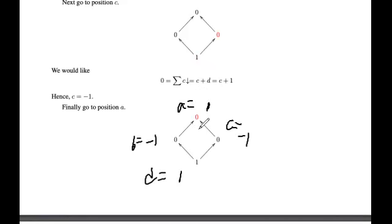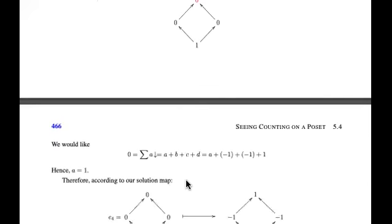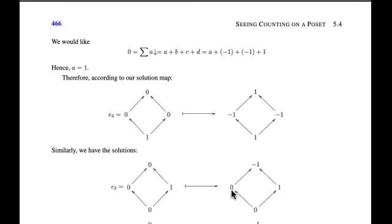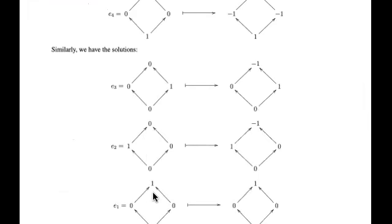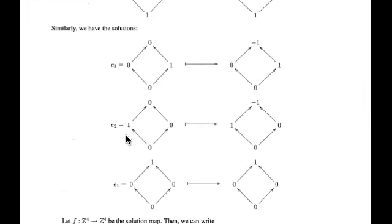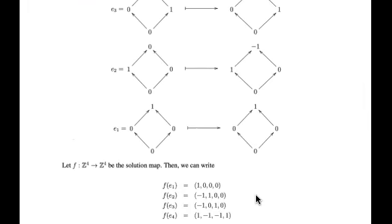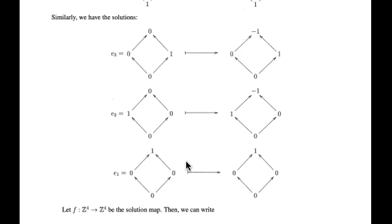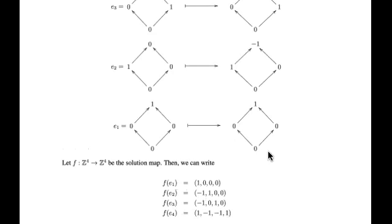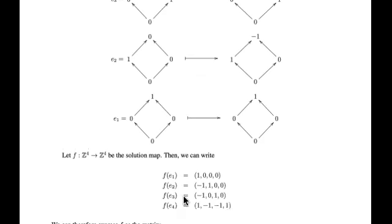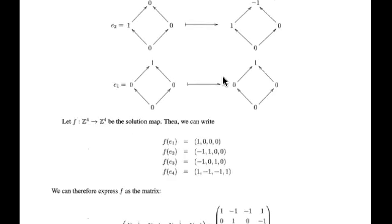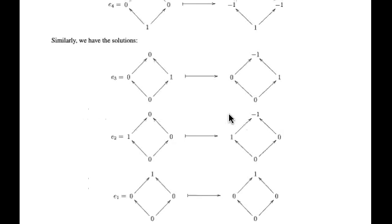So a is 1, b is negative 1, c is negative 1, and d is 1. That solves this particular basis element. We get that E4 has a solution that looks like this. Similarly, we can find solutions for the other standard basis tuples: E3 has its solution, E2 with a 1 in position 2 and 0s elsewhere has its solution, and E1 with a 1 in position 1 and 0s elsewhere has its solution.